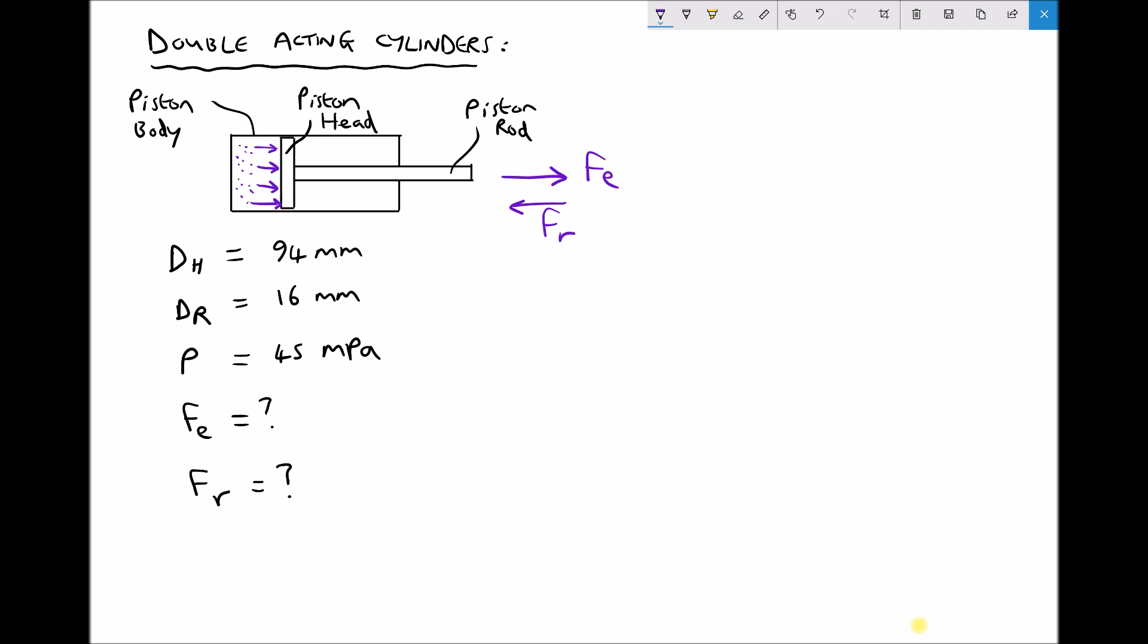Now if we consider the retraction stroke, when the cylinder retracts, pressure builds up in front of the piston head. That build-up of pressure this time acts on a smaller area. It acts on what we call the area of the annulus.